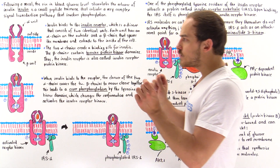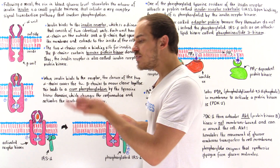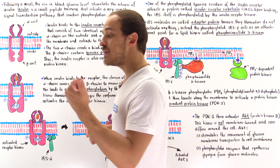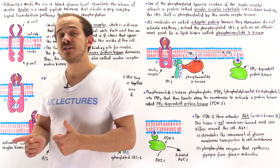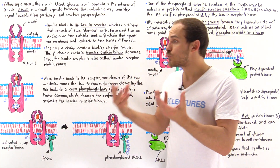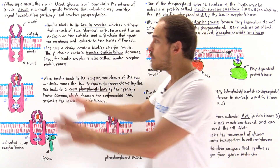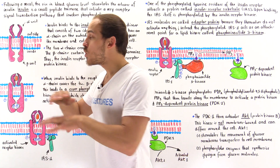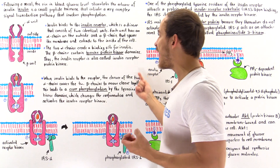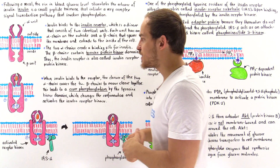Notice there's an important difference between this insulin receptor and the receptors we spoke of previously. In our discussion on the epinephrine signaling pathway, we said that pathway uses G proteins, and those receptors are known as G-protein coupled receptors. But in this particular case, for insulin, we don't actually use any G proteins. Instead, we have protein kinases found within the structure of this receptor.